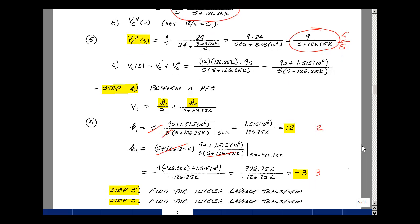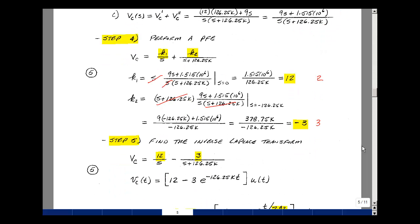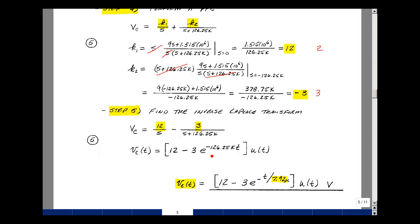The last step is the inverse Laplace transform. Using K1=12 and K2=−3, V_C(s) = 12/s − 3/(s+126.25K). The inverse transform gives a step of 12 volts minus 3·e^(−126.25K·t)·u(t). The time constant τ = 1/126.25K = 7.92 μs. So V_C(t) = (12 − 3·e^(−t/τ))·u(t) volts, where τ = 7.92 μs.